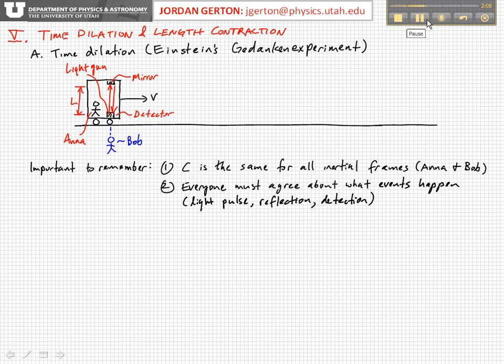There are two important things to remember about this experiment. First, the speed of light C is the same for all inertial frames—one of Einstein's postulates. We have to keep this in mind when looking at Anna and Bob's frames.